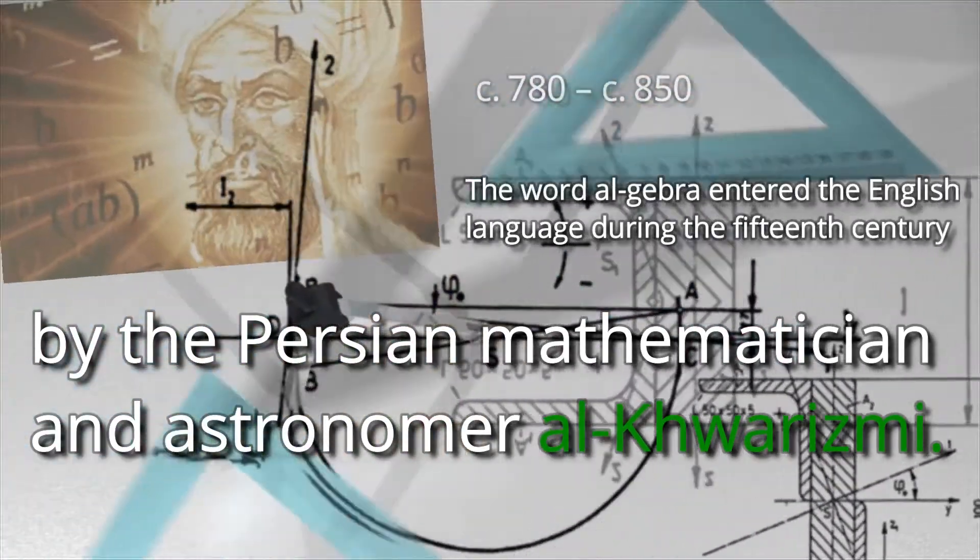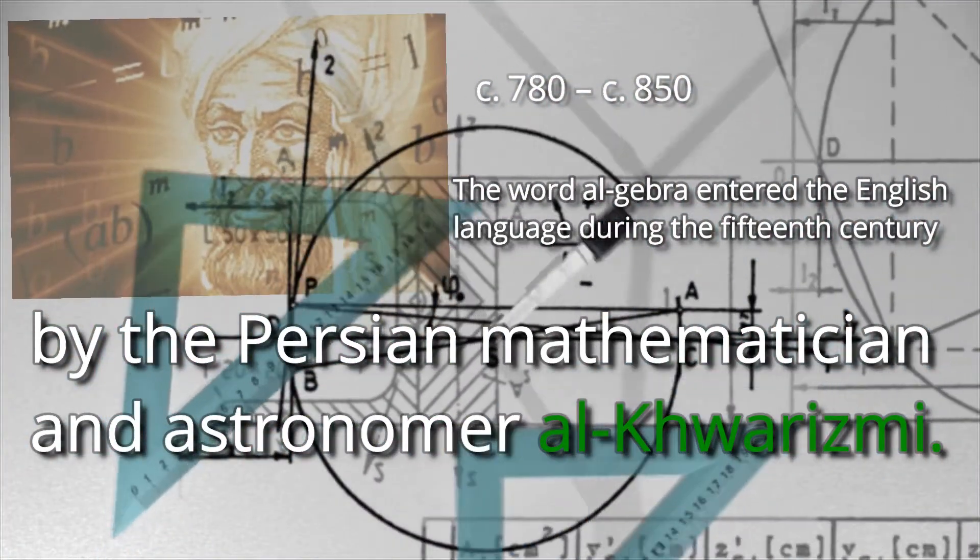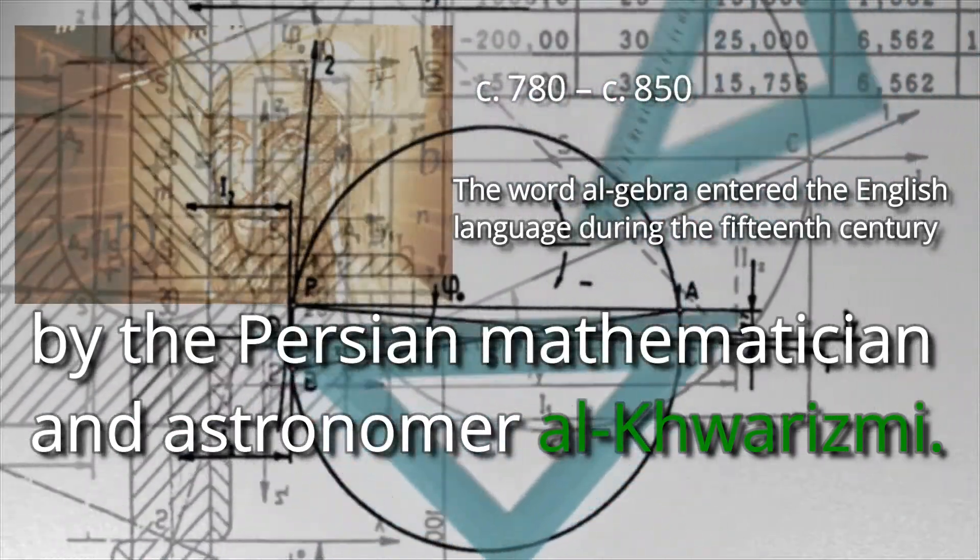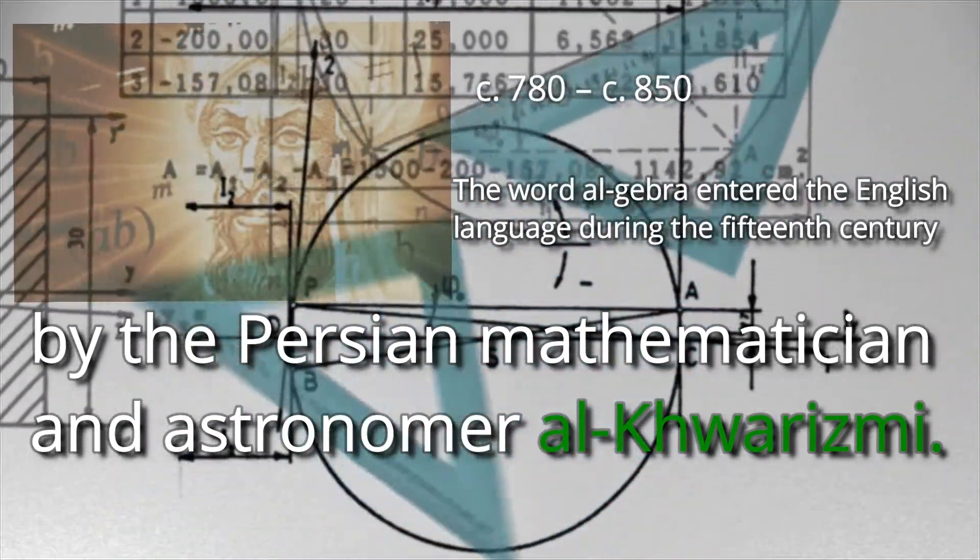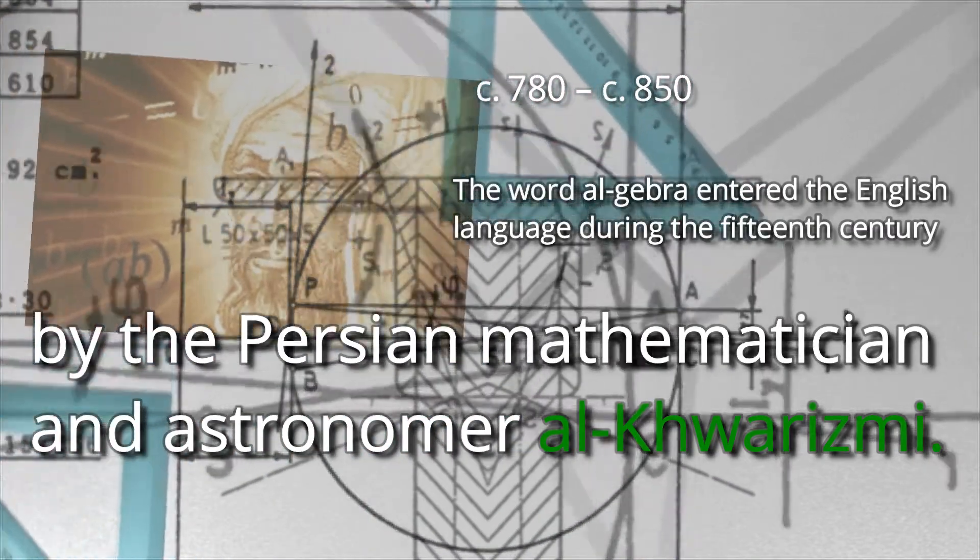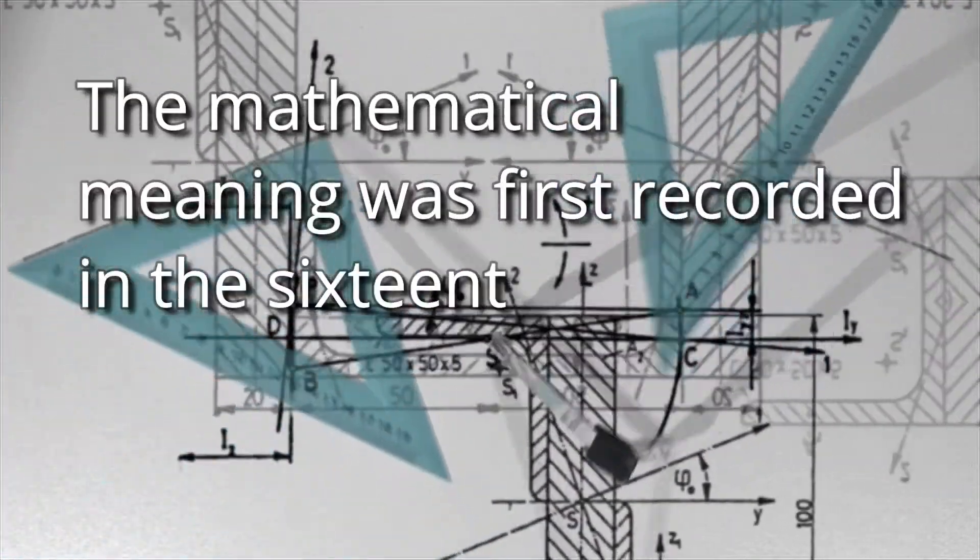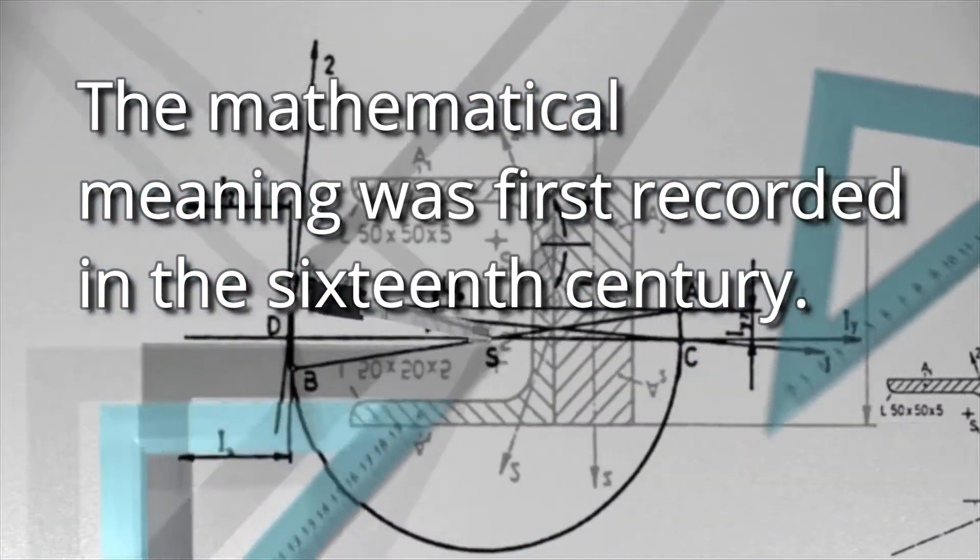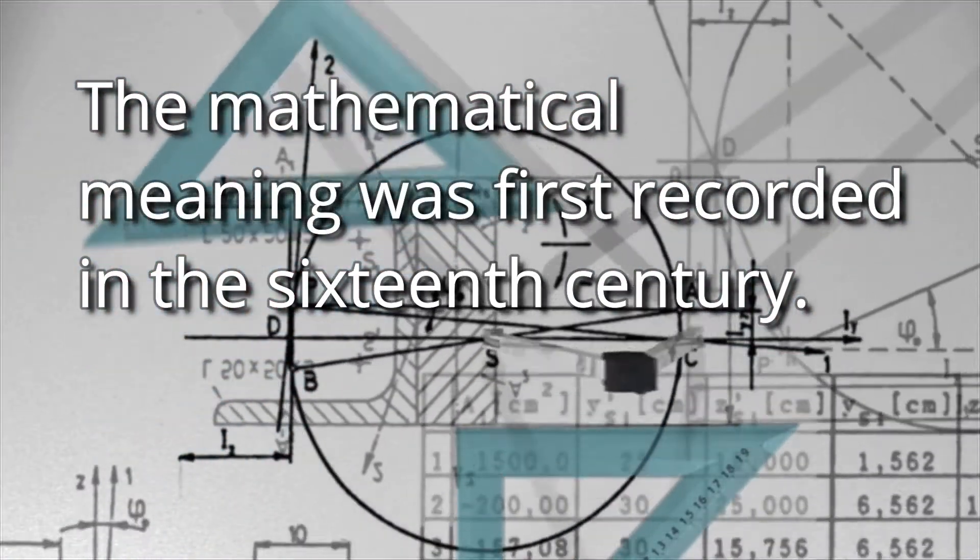The word entered the English language during the 15th century from either Spanish, Italian, or medieval Latin. It originally referred to the surgical procedure of setting broken or dislocated bones. The mathematical meaning was first recorded in the 16th century.